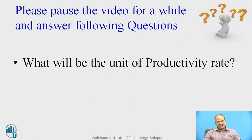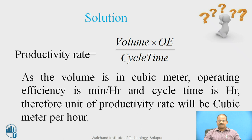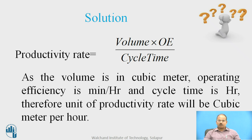Please pause the video and answer: what will be the unit of productivity rate? The productivity rate is based on volume, operational efficiency, and cycle time. Volume is in cubic meters (numerator), operating efficiency is in minutes per hour, and cycle time is in hours. Putting the units together, the unit of productivity rate is cubic meters per hour.